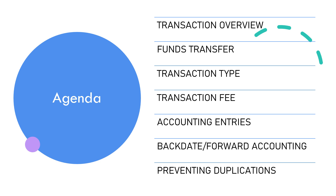The sixth topic is Back Date and Forward Accounting. In some special situations, banks need to perform accounting transactions that are effective on a past or future date, and this will be described in this topic. The last topic is Preventing Duplications — because duplicate transactions are a big pain point for customers and banks, and we will explore strategies to keep our financial records clean and accurate.